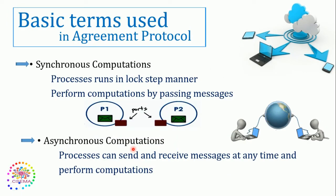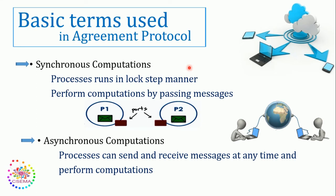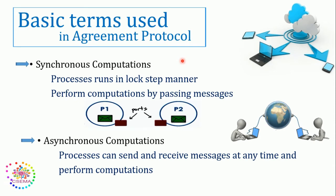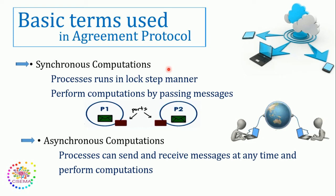Here we have the basic terms used in the agreement protocol. The first one is synchronous computations. Synchronous computations work in a locked manner. First, it receives a message, then the first lock. Then, according to the message received, the second lock. At last, it passes this message to another process — that's the third step. So it works in a synchronous manner, one by one, step by step, and performs computations by passing messages from one process to another.